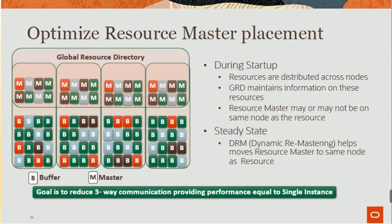Global Resource Directory (GRD): this is a buffer, this is a master. During startup, resources have distributed address nodes. GRD maintains information on these resources. Resource master may or may not be on the same node as the resource. In steady state, DRF dynamic remastering helps move the resource master to the same node as the resource. The ultimate goal is to reduce three-way communication, providing performance equal to single instance.